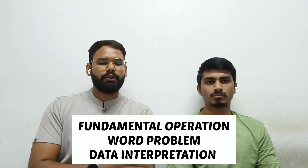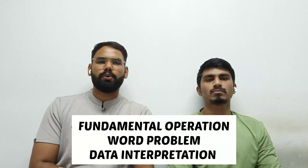For number and letter series, they give you a sequence like 1, 3, 5, 7 and you identify the next number — which would be 9. Similarly for letters, like A, B, C, D — the next would be E. Moving to the third section, Quantitative, you will find fundamental operations, word problems, and data interpretation. Fundamental operations are easy if you are good in maths. Word problems and data interpretation may include graphs.